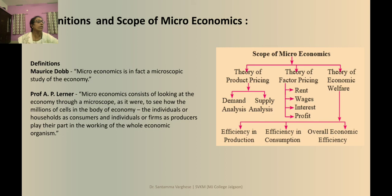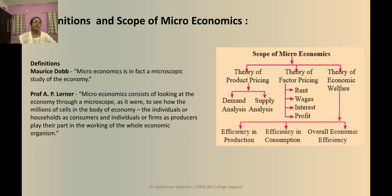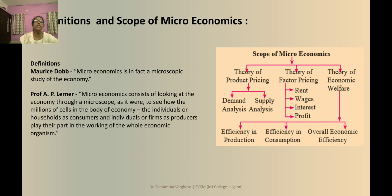Next is the theory of economic welfare, which basically deals with efficiency in the allocation of resources. Economic efficiency, essential for the welfare of the people, includes three types: efficiency in production, efficiency in consumption, and overall efficiency — as shown in the chart.